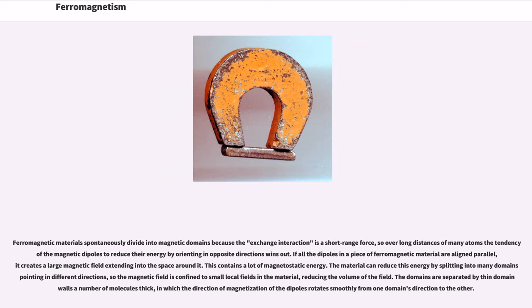Ferromagnetic materials spontaneously divide into magnetic domains because the exchange interaction is a short-range force, so over long distances of many atoms the tendency of the magnetic dipoles to reduce their energy by orienting in opposite directions wins out. If all the dipoles in a piece of ferromagnetic material are aligned parallel, it creates a large magnetic field extending into the space around it. This contains a lot of magnetostatic energy. The material can reduce this energy by splitting into many domains pointing in different directions, so the magnetic field is confined to small local fields in the material, reducing the volume of the field. The domains are separated by thin domain walls, a number of molecules thick, in which the direction of magnetization of the dipoles rotates smoothly from one domain's direction to the other.